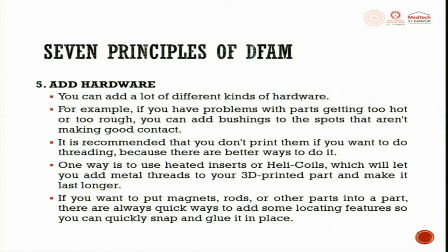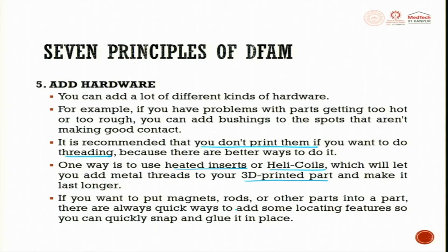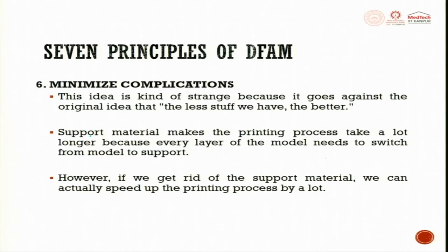Add hardware: you can add many different kinds of hardware. For example, if parts get too hot or too rough, you can add brushing to the spots that aren't making good contact. It is recommended not to print threads directly — instead, use a heated insert or helical coil, which lets you add metal threads to your 3D printed part. If you want to put magnets, rods, or other parts into a component, there are quick ways to add locating features and snap or glue them in place.